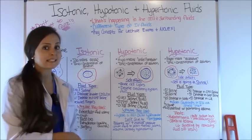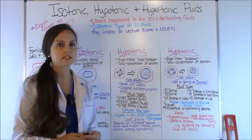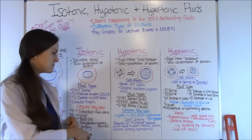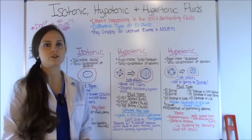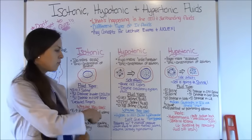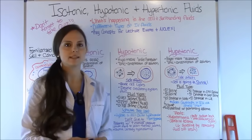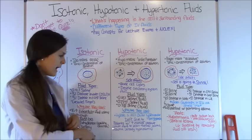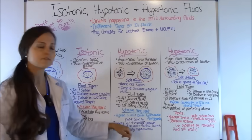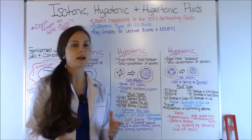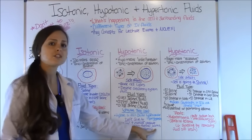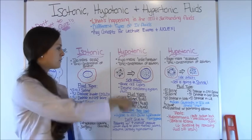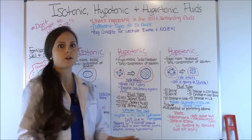There are instances where you do not want to give a hypotonic solution — this is a popular test question. If a patient comes in with increased intracranial pressure and is ordered 0.33% normal saline, you would not give it, because it will shift fluid into the brain tissue and cause brain swelling. Also avoid hypotonic solutions in patients with burns or trauma, because these patients are already hypovolemic and you don't want to further deplete the circulatory system.